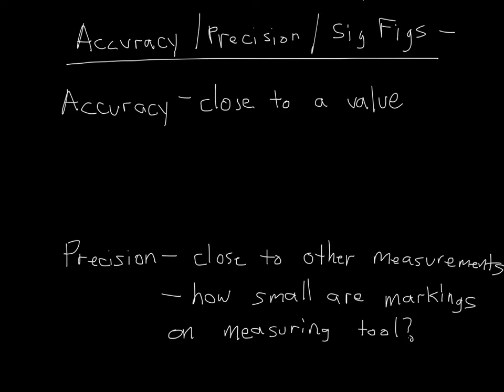Some other concepts we want to be familiar with in physics are the concepts of accuracy, precision, and how those relate to something called significant figures. We have two definitions. We want to know accuracy, which is how close you are to an actual value, an actual measurement. And we can quantify this using something called a percent error or a percent difference.